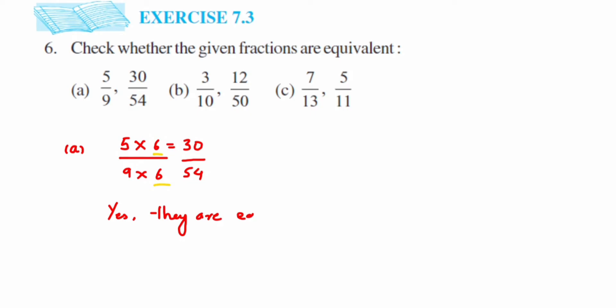Second question we have 3/10 and 12/50. We have to check whether they are equivalent or not. From 3 to 12, we're multiplying again. With what number? 3 times 4 is 12, and 10 times 5 is 50.